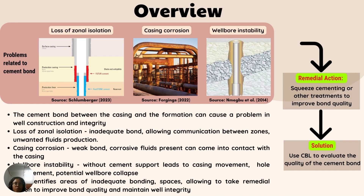Next is the overview. First, the problems that cement faults cause in the petroleum industry in terms of well construction and integrity. Loss of zonal isolation, casing corrosion, and wellbore instability are examples. To solve these problems, we use squeeze cementing or other treatments to improve bond quality. But first, we need to know the location of the weak bond, and this is where the cement bond log comes in handy, as it assists in determining which specific area has a weak cement bond.